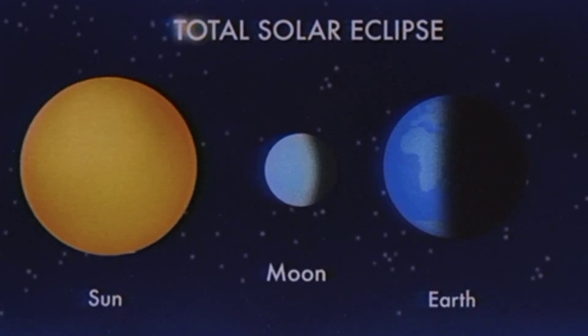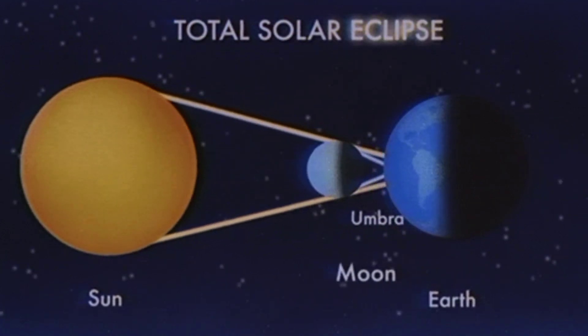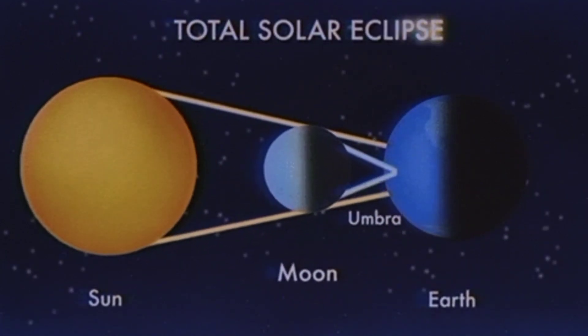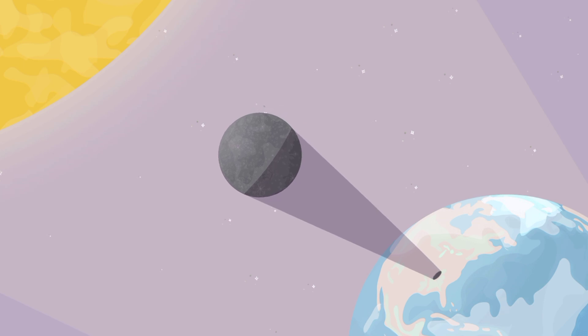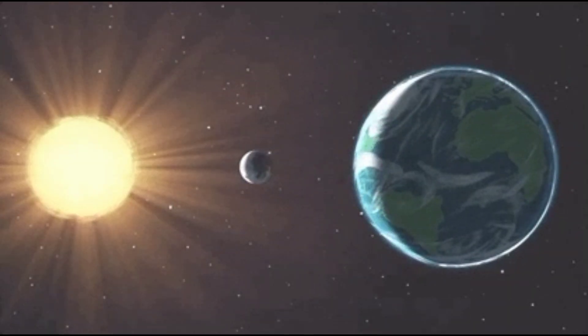During a solar eclipse, the Moon orbits the Earth and sometimes passes directly between the Sun and our planet. When this alignment occurs, the Moon's shadow falls on the Earth's surface, which we call an eclipse.